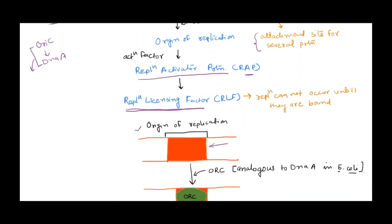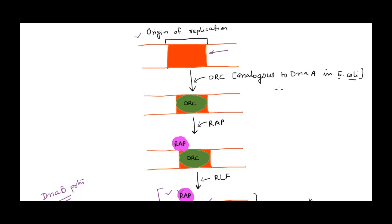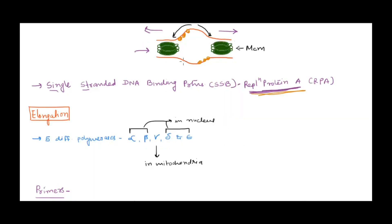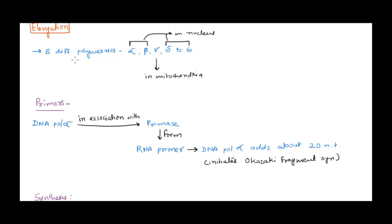Once single strands are available, DNA polymerase comes into the picture. In eukaryotes there are five different polymerases: alpha, beta, gamma, delta, and epsilon. Gamma is present in mitochondria, so we won't discuss it. Beta is involved in DNA repair. Therefore, alpha, delta, and epsilon are the ones involved in replication.